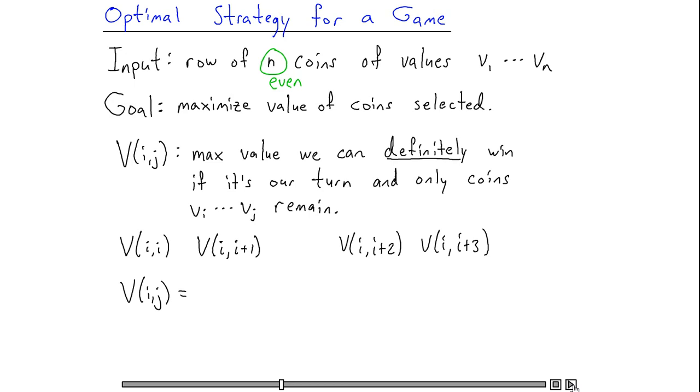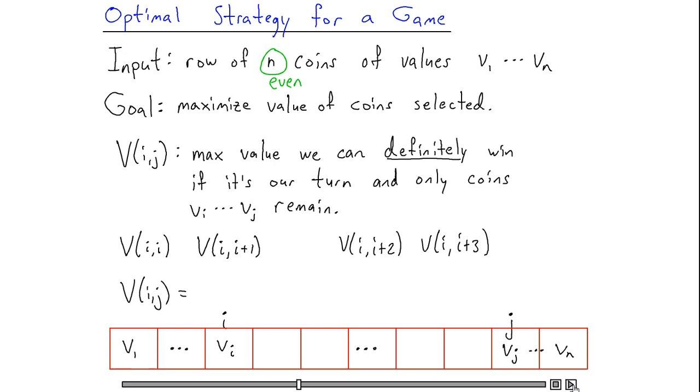For each subproblem, we can compute V(i,j) as follows. Of our original n coins, we're focusing only on the range from the i-th coin up to the j-th coin. Since it's our turn to move, we have a choice of picking either the i-th coin or the j-th coin. Since we would like to pick whichever gives us the best result, we're going to choose the maximum of two things: the best value if we pick the i-th coin, and the best value if we pick the j-th coin.